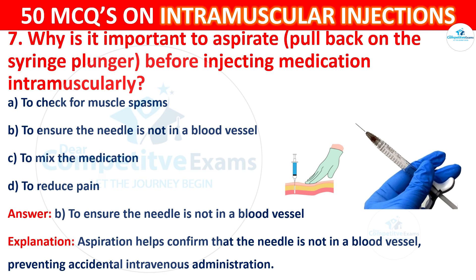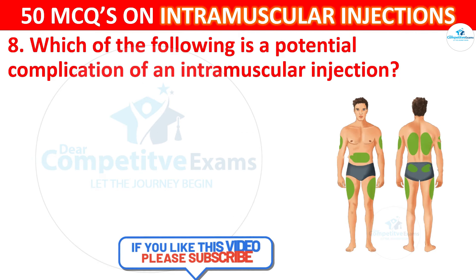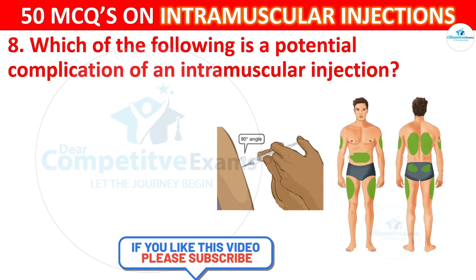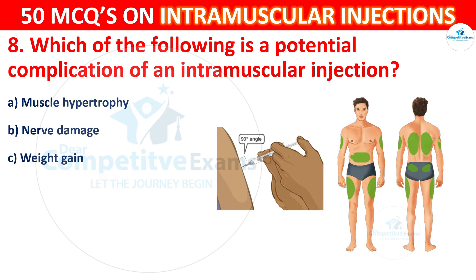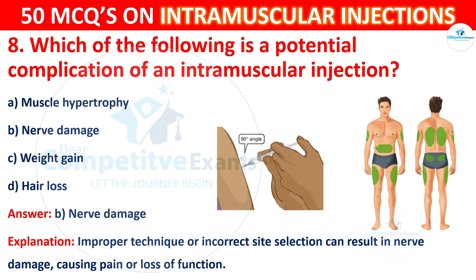Question 8: Which of the following is a potential complication of an intramuscular injection? Options are: muscle hypertrophy, nerve damage, weight gain, or hair loss. The correct answer is B, nerve damage. Improper technique or incorrect site selection can result in nerve damage, causing pain or loss of function.